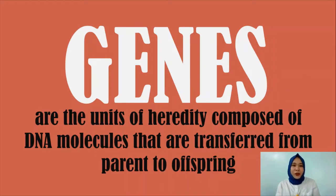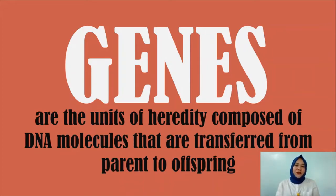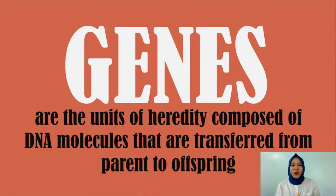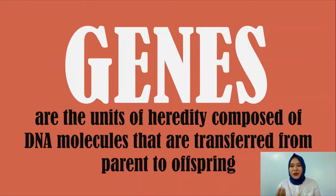When we talk about genetics, we cannot avoid talking about genes. Basically, when you say genetics, it's the study of genes. What are genes? These are the units of heredity composed of DNA molecules that are transferred from parent to offspring. A lot of things are actually coded by your genes. For example, there's no such gene that would code for homosexuality, and there's no such gene that would code for gender orientation — by the way, gender and sex are different.